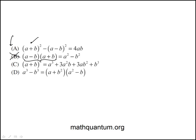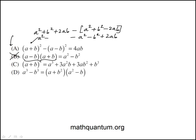This one we can do a quick expansion. This is a² + b² + 2ab, and then this in parentheses would be a² + b² - 2ab. If I distribute the minus, the a² terms cancel out and the b² terms cancel, and I'm left with 4ab. So that one is also true for all a's and b's.